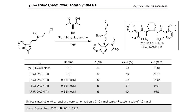Notably, initial optimization of the enantioselective allylic substitution reaction was performed with the SS-configured Trost ligands. However, to synthesize the natural product, we switched to the RR-configured ligands, based on extrapolation of the stereochemical results from the related system of Trost and co-workers.